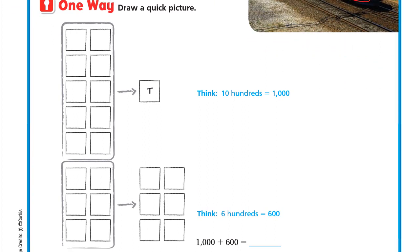One way is to draw a quick picture. We have 8 times 2 hundreds, and 2 hundreds are represented as 2 flats. So here are the eight cars, each with 200. Counting all the flats: 10 flats, or 10 hundreds, equals 1 cube or 1 thousand. We still have 6 flats remaining, which are 6 hundreds. So we have 1 thousand and 6 hundred.